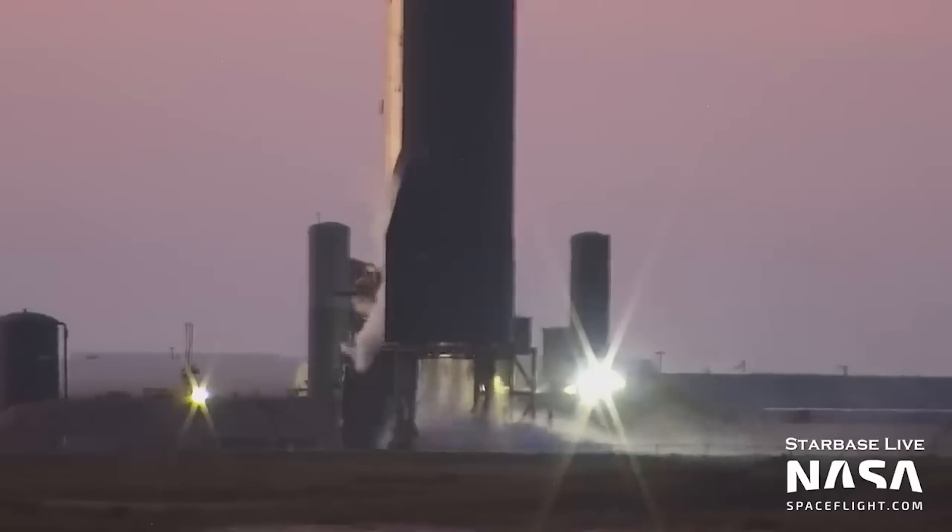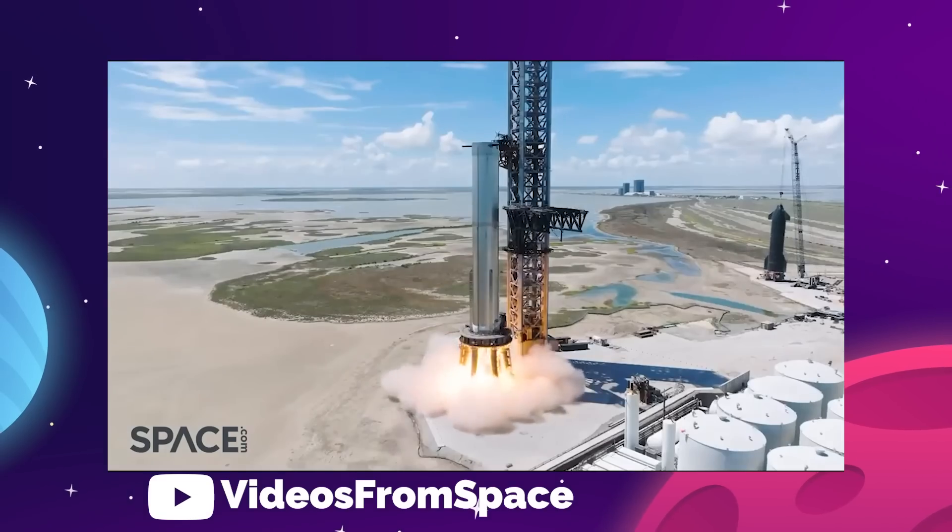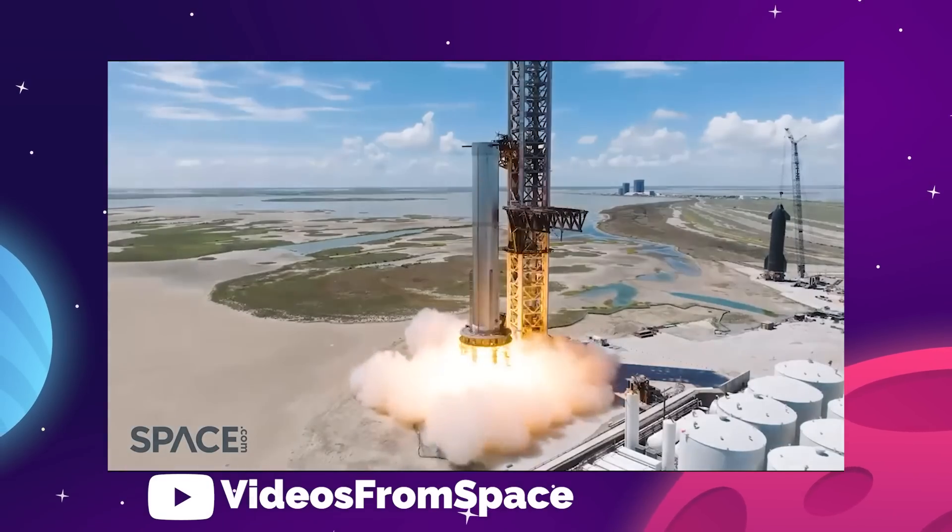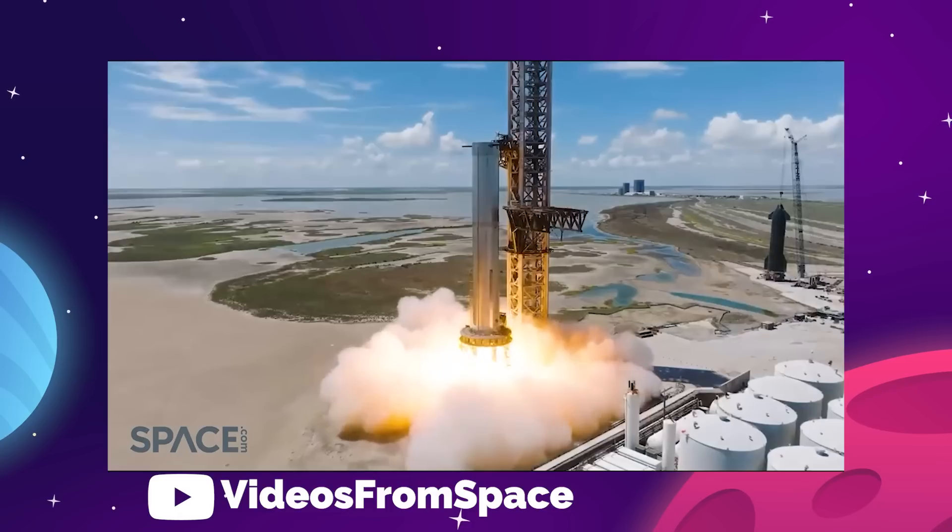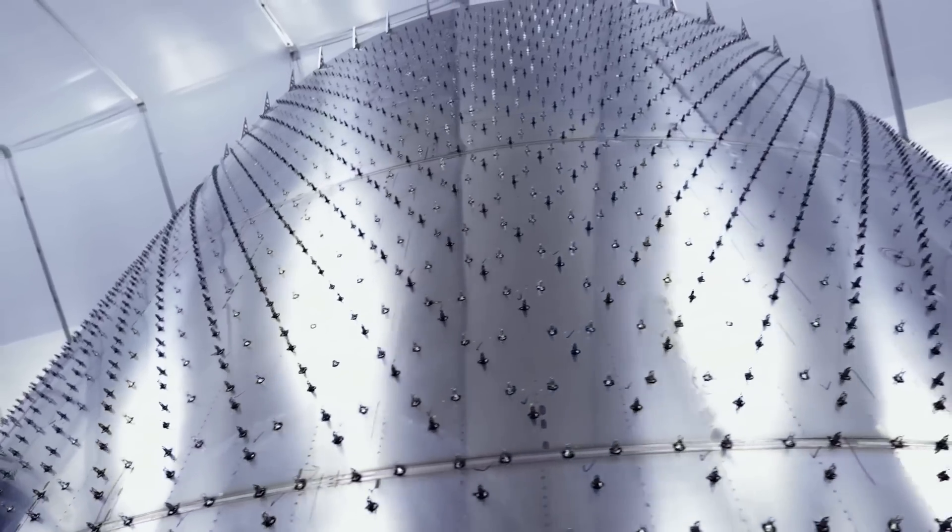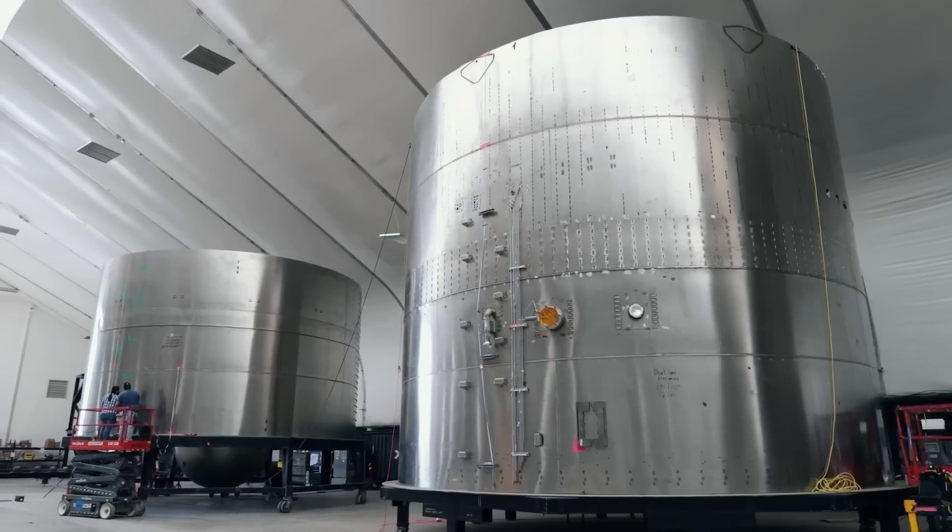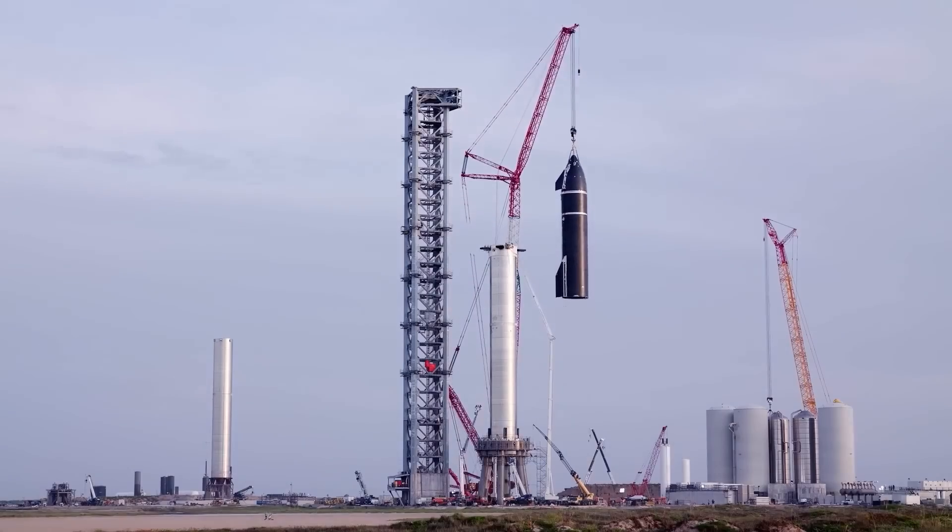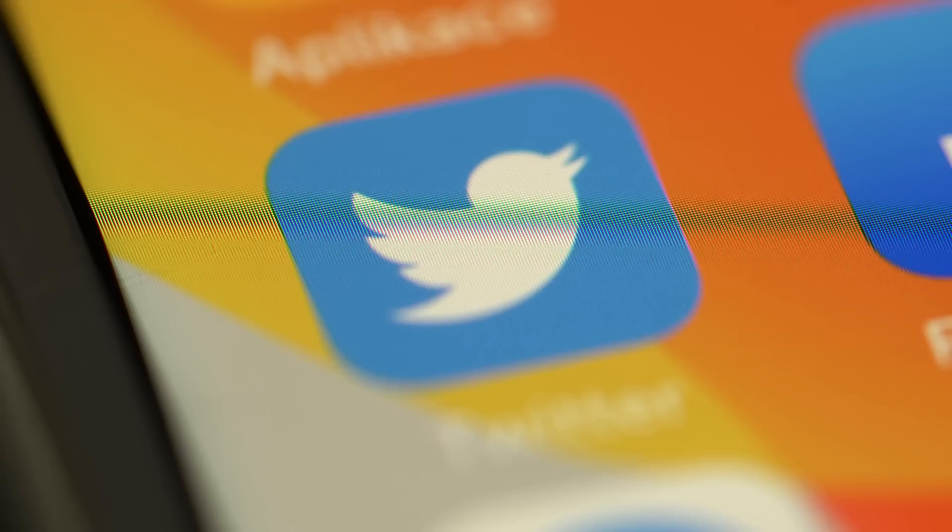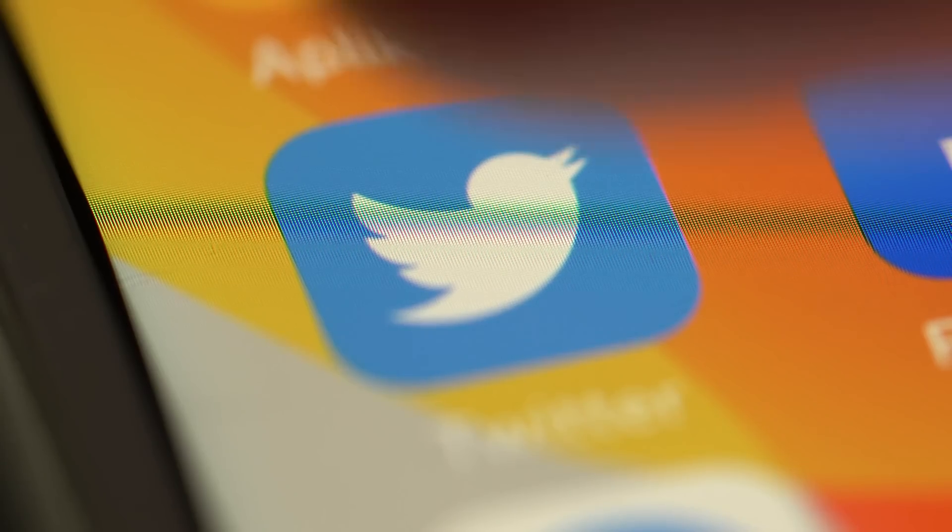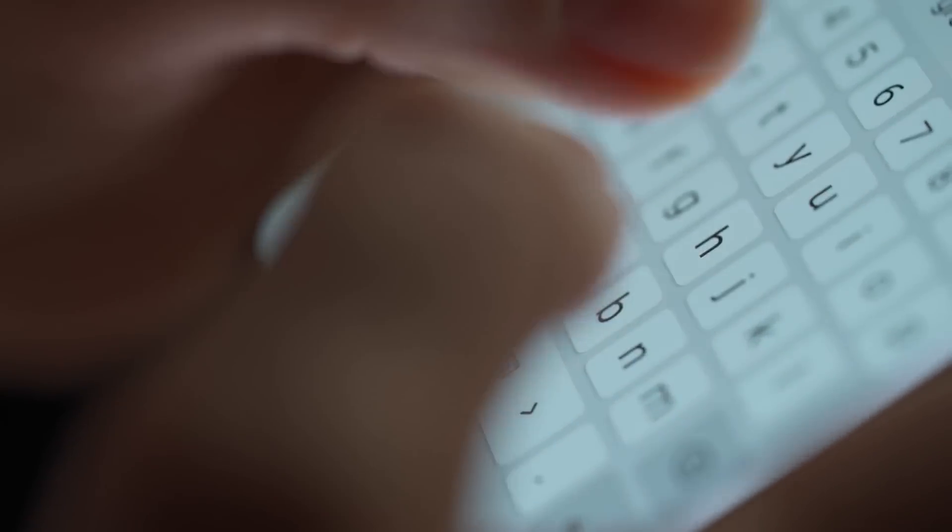This formed the first full stack of the Starship system since March this year. SpaceX has been carefully testing the orbital mount, Starship 24, and Booster 7 and 8, while completing a huge amount of background work, constructing other boosters and Starship variants, and making upgrades here and there. We knew a full stack was coming soon.